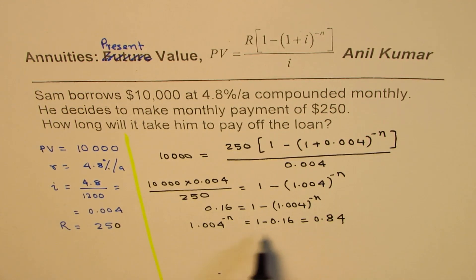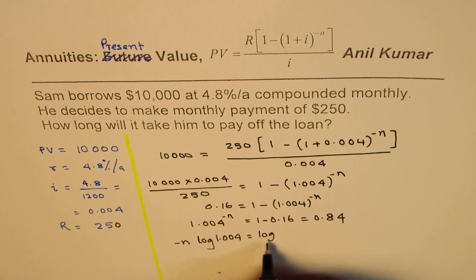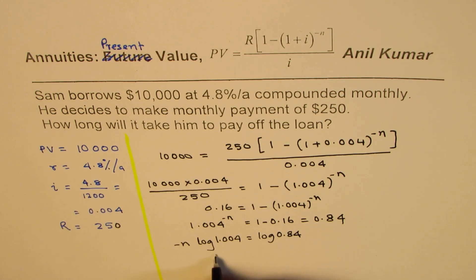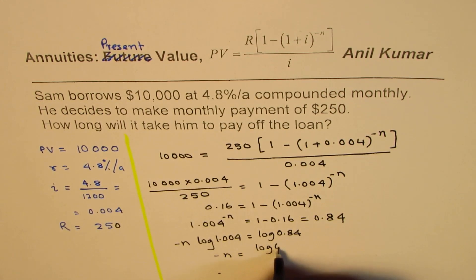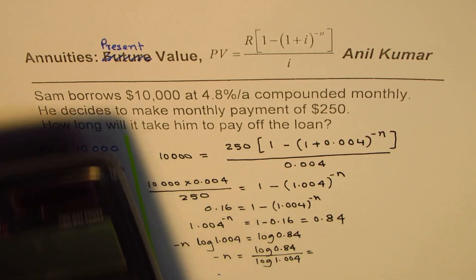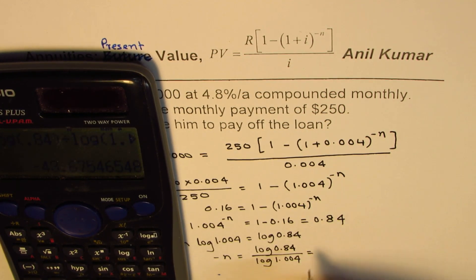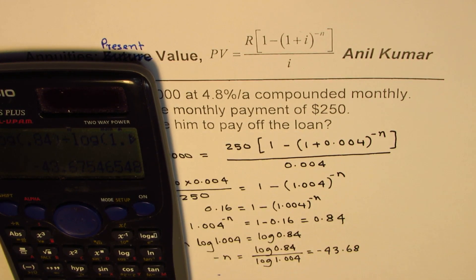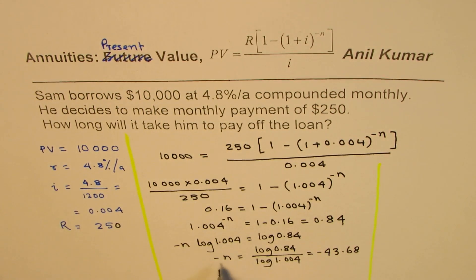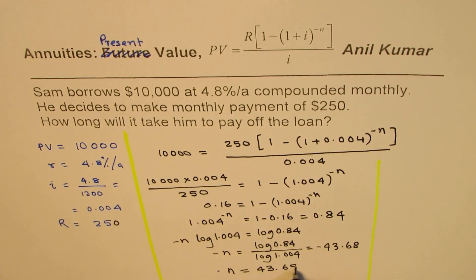To find n, we take logarithms on both sides: minus n times log(1.004) equals log(0.84). So minus n equals log(0.84) divided by log(1.004). Using the calculator, log(0.84) divided by log(1.004) gives us minus 43.68. Therefore minus n equals minus 43.68.